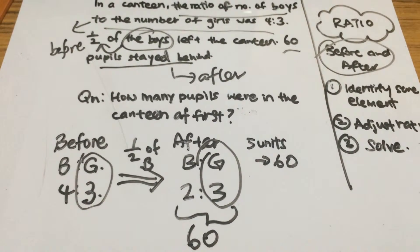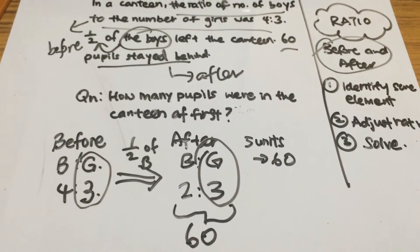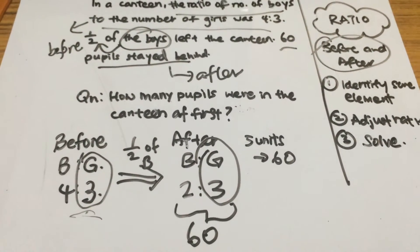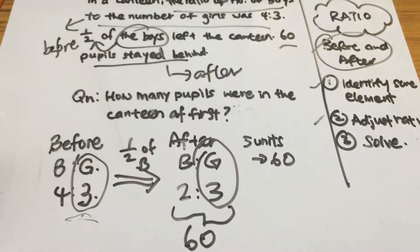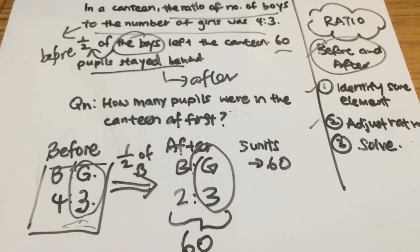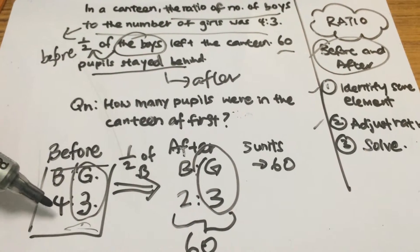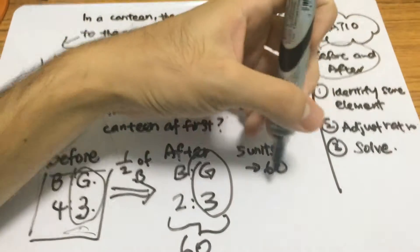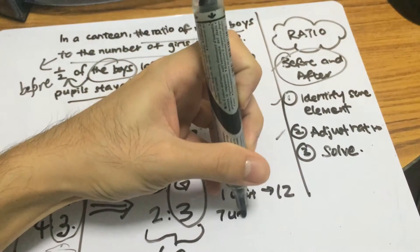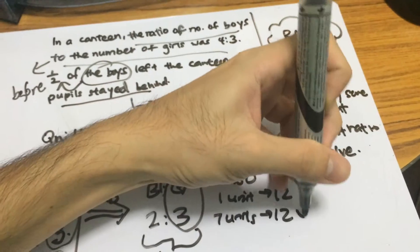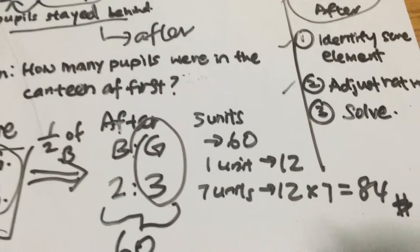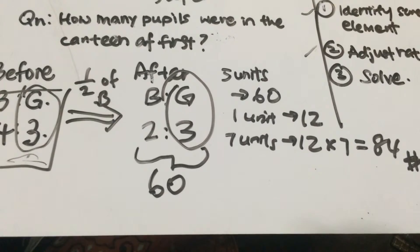Actually the question says: how many pupils were in the canteen at first? We have already identified the same elements and adjusted the ratio, so we can simply solve. The answer is seven units, because at the beginning there were four units of boys and three units of girls. Five units is 60, so one unit is 12. Seven units is 12 times seven, which gives 84 — that is the answer.